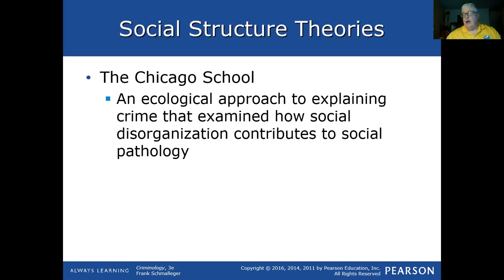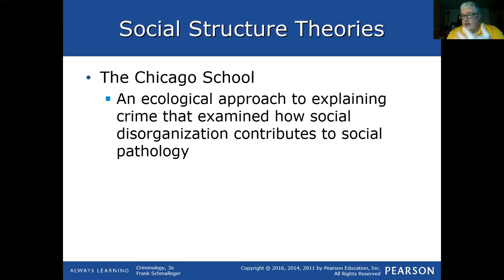Social pathology basically compares a society or a city to an organism. Consider that when a person dies, the pathologist examines the body to determine the cause of death. Similarly, social pathology looks at a community or society as being sick — the problems in crime causation have to do with that sick society.